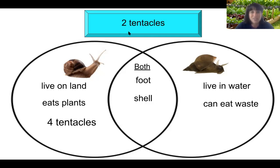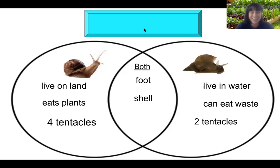Our next word says two tentacles. Well, if we already know that the land snail has four, we're going to put it over here with the water snail. Two tentacles — you can see them right here. Remember, the water snail's tentacles do not retract; they stay out all the time, unlike the land snail, which has the ability to retract all of its tentacles.